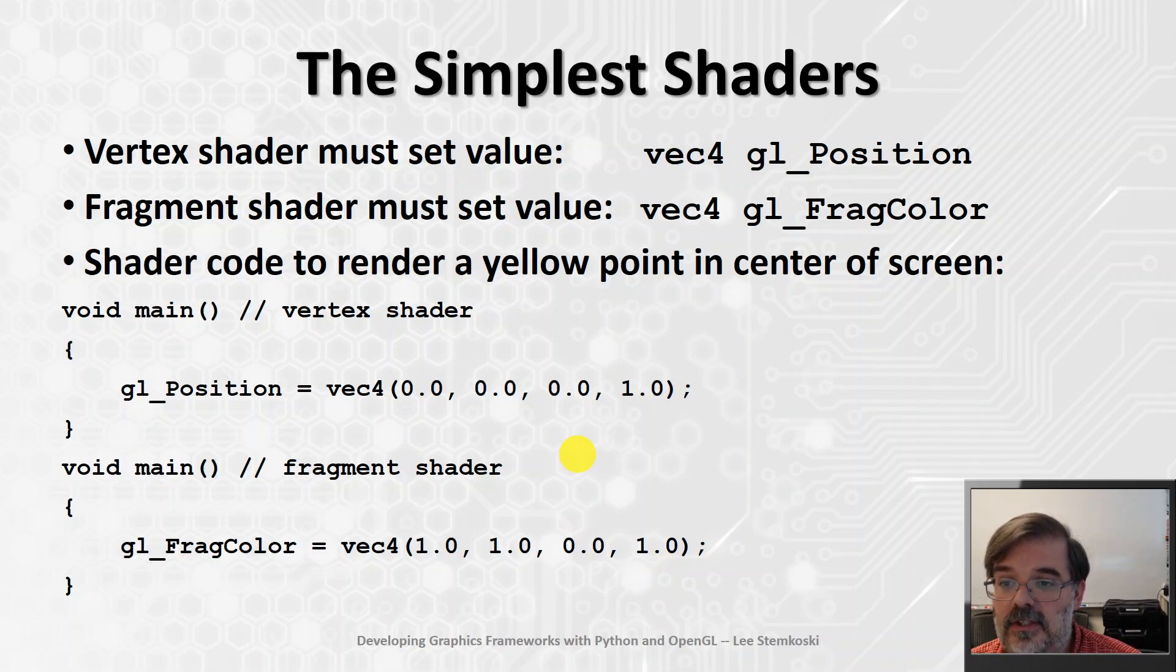And that's it. This code can be used to render a yellow point in the center of the screen. It can only be used to render a single point. And again, in this very simple example, we're avoiding the use of buffers entirely. We just want to be able to write some code and get a point on the screen as quickly as possible.